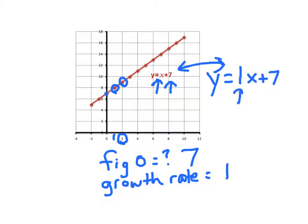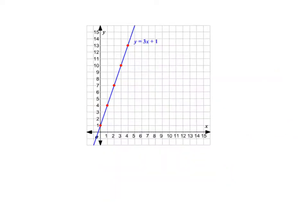So again, there's our growth rate. Or the rate of change. Here, we have y equals 3x plus 1. So again, let's answer a couple questions. How many tiles would there be in figure 0? And what is the growth rate?